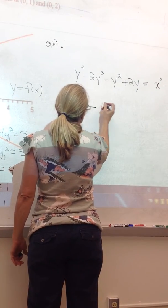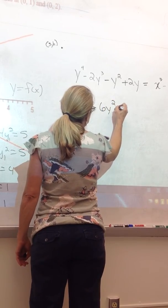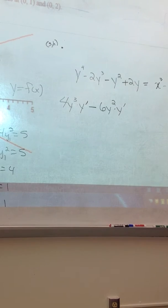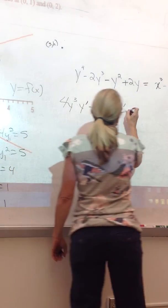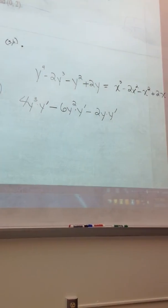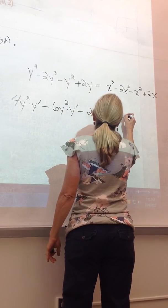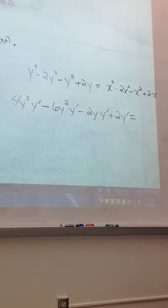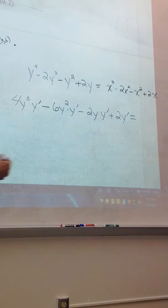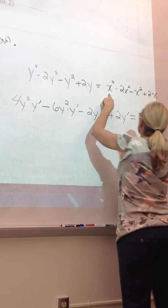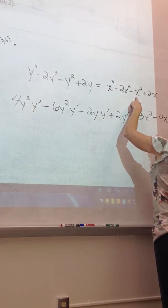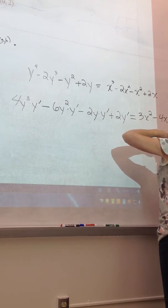Then negative 6y squared times y prime minus 2y times y prime. All of those terms had y in it, so all of them are going to have y prime. But then x is just an independent variable, so this will be 3x squared, this will be 4x, this will be 2x. Oh, I could have combined those.